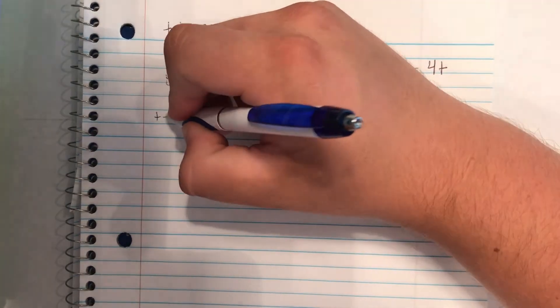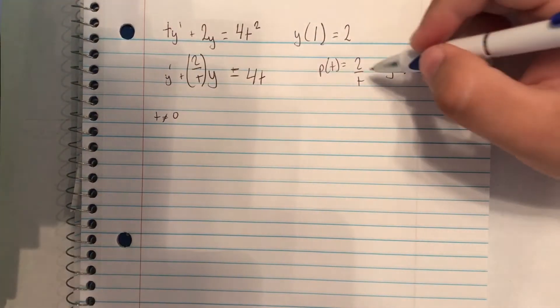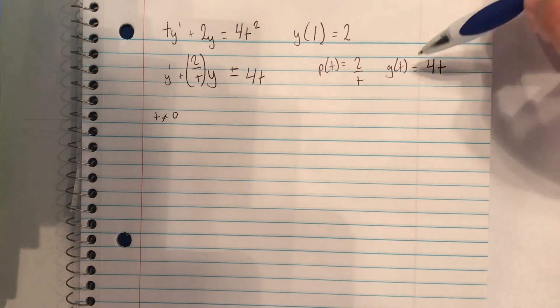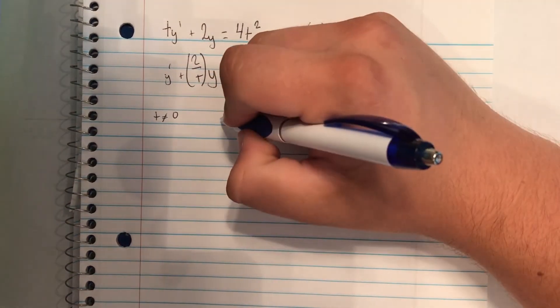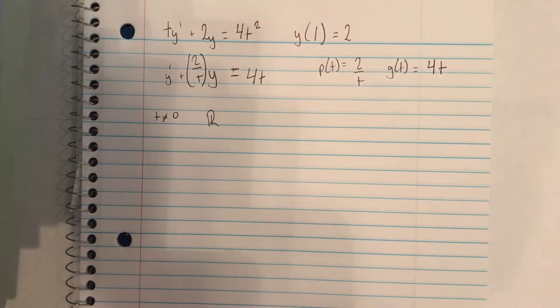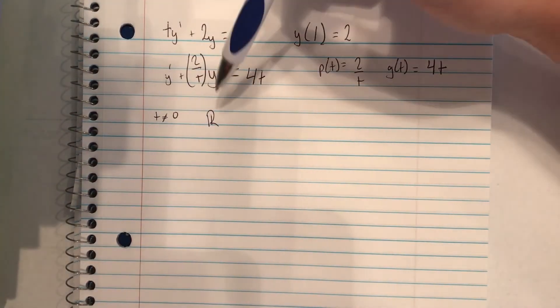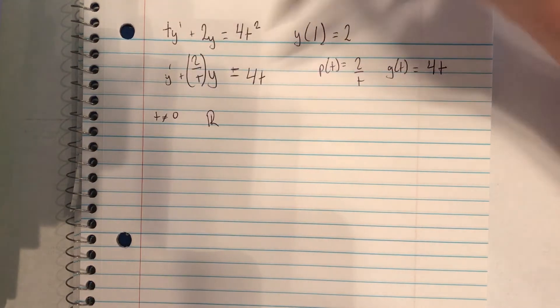So t cannot equal 0 for p(t). That is because the denominator cannot equal 0. g(t) has all real solutions. So this just means that t cannot equal 0 for all of this.